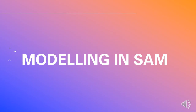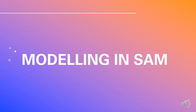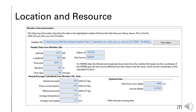Now we will discuss the various procedures we carried out to model in SAM. We used the detailed PV model with commercial owner in SAM. Then we started our location analysis under the location and resource tab, and extracted the weather data for Bergeron using the geographic coordinates.